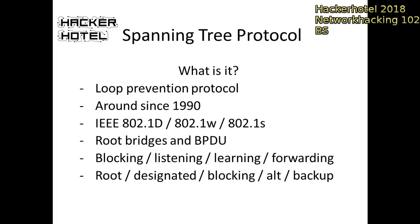There are a number of port roles. The root port — a switch has only one root port, which is always in forwarding and is the shortest way to the root bridge. A port can also be in designated state, meaning it's going to be in forwarding state but is not the shortest path to the root bridge. And then there's the blocking state for loop prevention. Later implementations add more roles, for example the alternate root port, which is in blocking but takes over if the primary root port goes down.